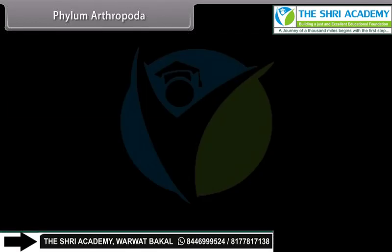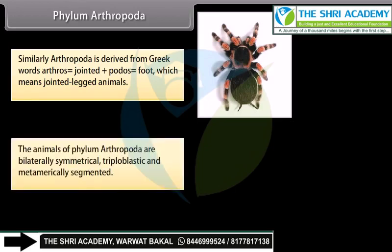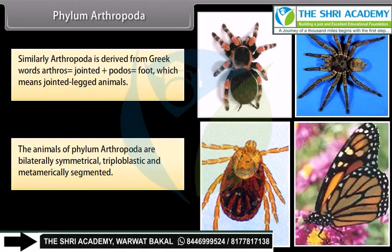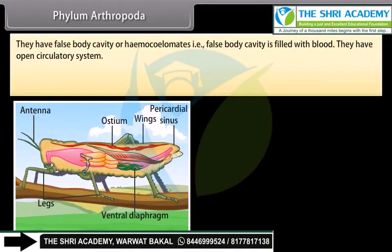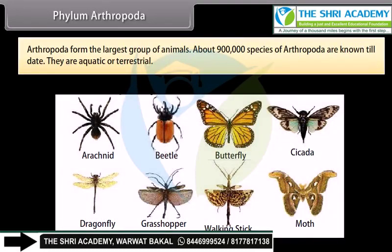Phylum Arthropoda. Arthropoda is derived from Greek words: arthros, meaning jointed, plus podos, meaning foot — which means jointed-legged animals. The animals of Phylum Arthropoda are bilaterally symmetrical, triploblastic, and metamerically segmented. They have a false body cavity, or haemocoel, that is false body cavities filled with blood. They have an open circulatory system. Their body is divided into two parts — cephalothorax and abdomen — or three parts: head, thorax, and abdomen. Arthropoda forms the largest group of animals; about 9 lakh species are known till date. They are aquatic or terrestrial.